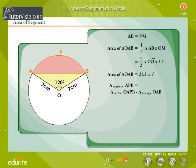Area of segment APB is equal to area of sector OAPB minus area of triangle OAB. That is equal to 51.3 cm² minus 21.2 cm². That is equal to 30.1 cm².